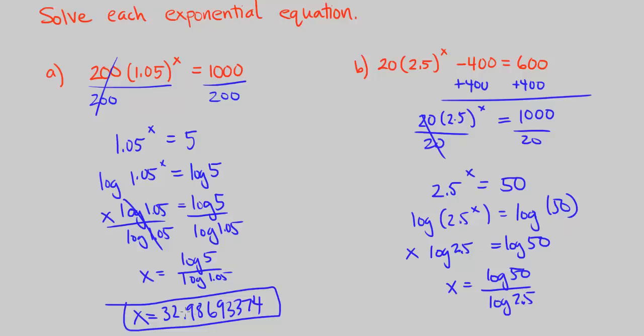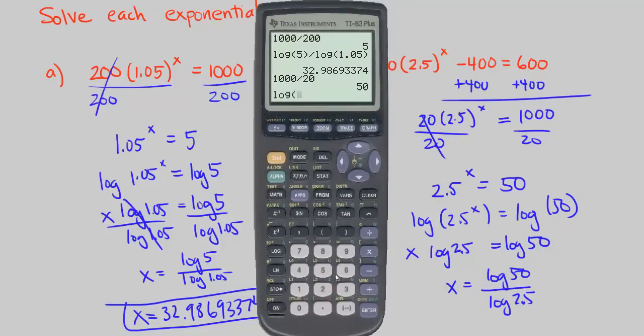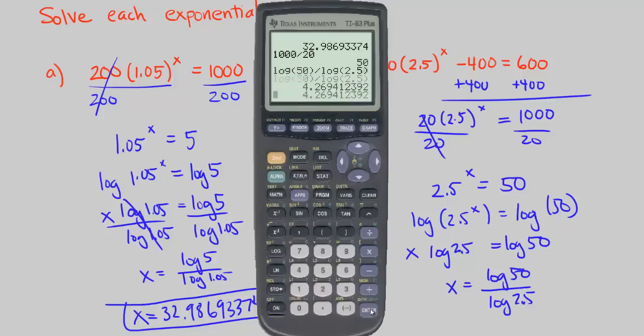And since there's no base, these are all base 10, we can use our calculator. That gives us log of 50 divided by log of 2.5. And so x equals 4.269412392. That's going to give me the best approximation of x. All right, that ends CPM Precalculus Chapter 3, Number 124.